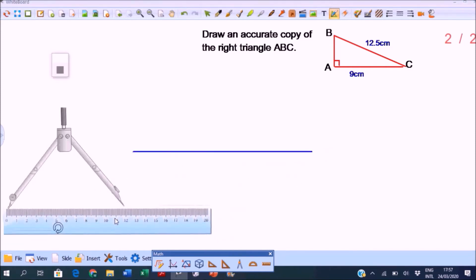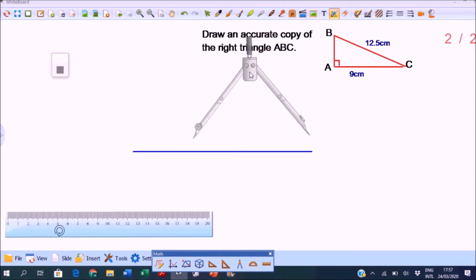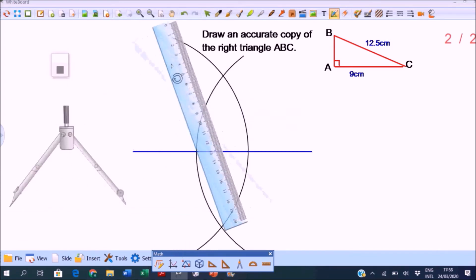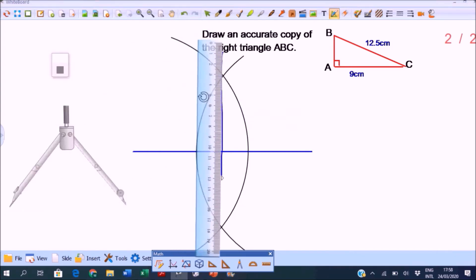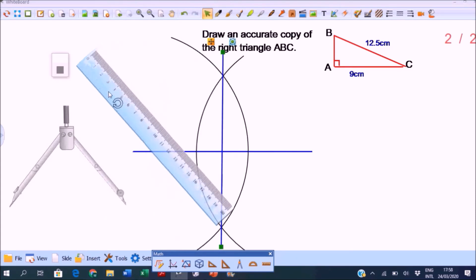Then draw a perpendicular bisector of this line. Open the compass to more than half the length, then draw a large arc from above going down below the line. Keep the compass point the same, then draw a large arc intersecting the first arc that we have drawn.